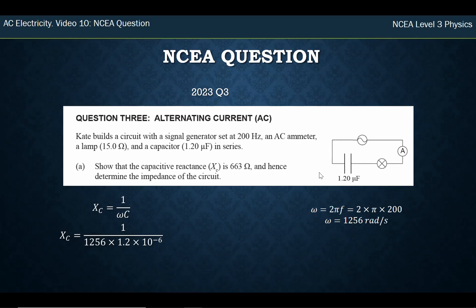1 divided by 1,256, and remember the 1.2 microfarads is 1.2 × 10 to the minus 6. Our calculator spits out 663, just like they've asked for.